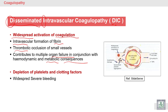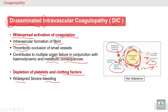DIC involves widespread activation of coagulation factors and widespread platelet aggregation, leading to formation of microthrombi. A large amount of clotting factors and platelets are consumed, decreasing clotting factors and platelets in the blood. Activation of the fibrinolytic system leads to release of fibrin degradation products (FDPs). Depletion of platelets and clotting factors causes widespread severe bleeding. So DIC is a very severe condition with both thrombosis and bleeding, and organ failure.